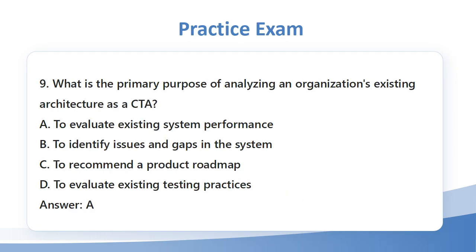Question 9: What is the primary purpose of analyzing an organization's existing architecture as a CTA? a. To evaluate existing system performance. b. To identify issues and gaps in the system. c. To recommend a product roadmap. d. To evaluate existing testing practices. Answer: A.